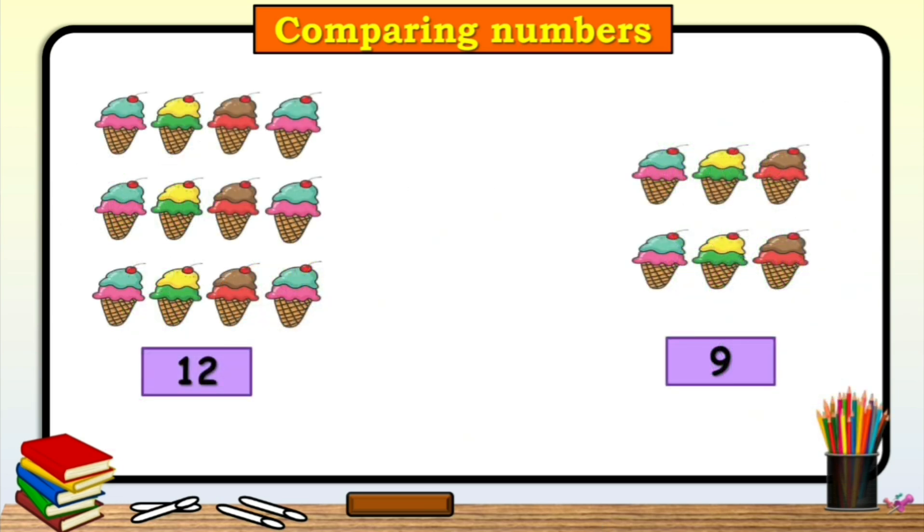Now, let us consider the given example. Children, tell me, which group of ice creams has more ice creams? This side, we have 12 ice creams and this side, we have 9 ice creams. So, which number is greater than 12 or 9?